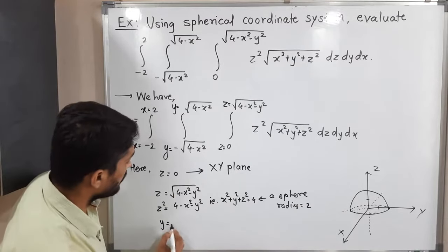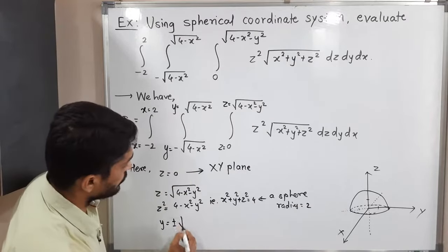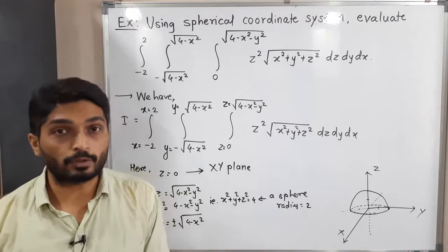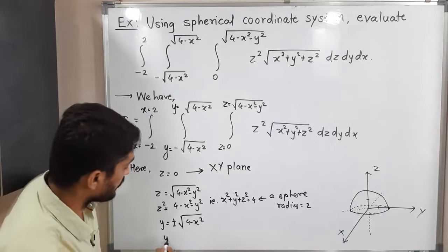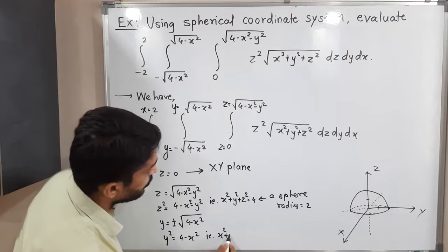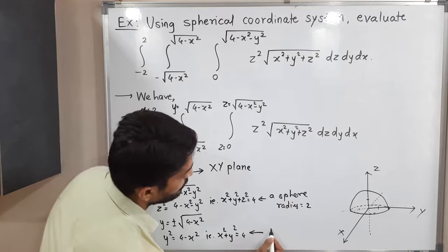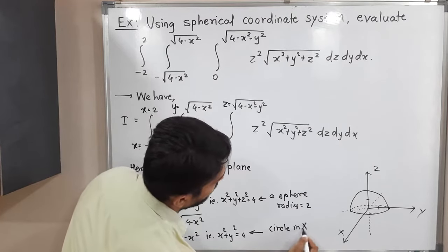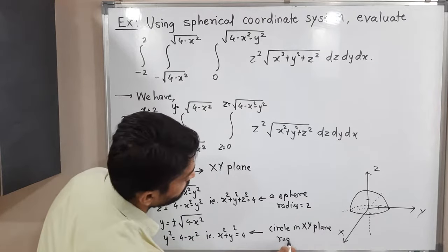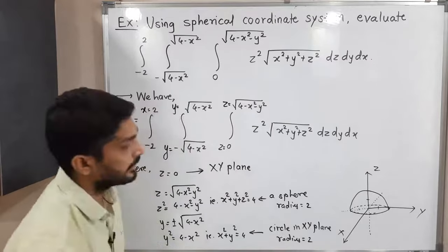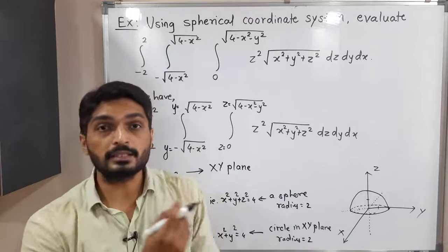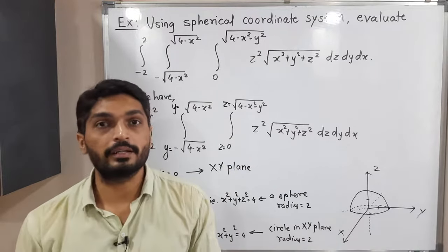Since we have limits plus or minus square root of four minus X squared, I will use the same technique and square both sides. So Y squared equals four minus X squared, giving X squared plus Y squared equals four. This is the equation of a circle in the XY plane having radius two. So when the sphere intersects the XY plane, we get a circle with center (0, 0) and radius two.